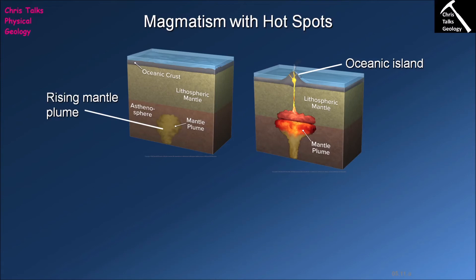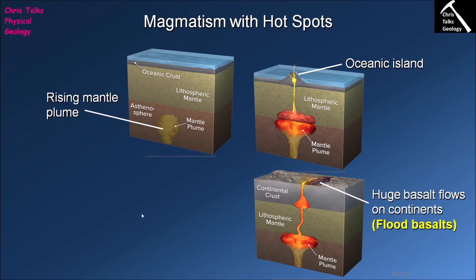The next question is: what happens if our mantle plume gets stuck underneath some continental lithosphere? In that event, one of the things that can happen is that the mafic magma can actually make its way all the way to the surface. Here's our mantle plume — it's hit the base of our continental lithosphere, undergone some melting, and will also begin to melt some of the mantle rocks which are part of the lithospheric mantle, and the resulting mafic magma rises up towards the surface.